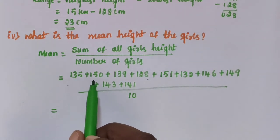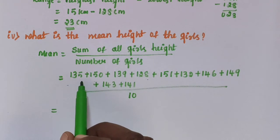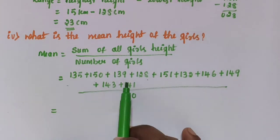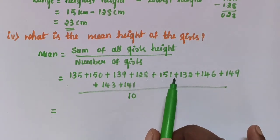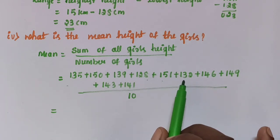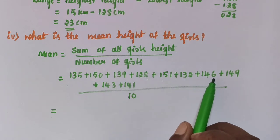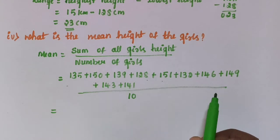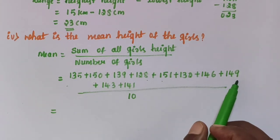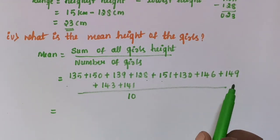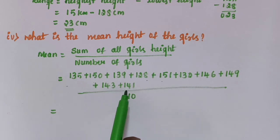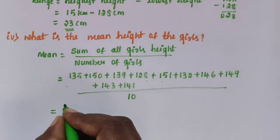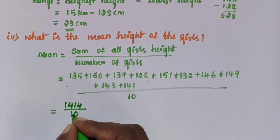Adding the numbers: 135 + 150 = 285, + 139 = 424, + 128 = 552, + 151 = 703, + 132 = 835, + 146 = 981, + 149 = 1130, + 143 = 1273, + 141 = 1414. So 1414 is divided by 10.